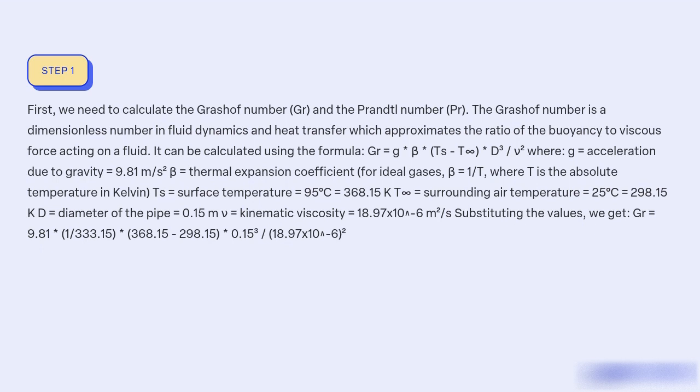D = diameter of the pipe = 0.15 m, ν = kinematic viscosity = 18.97×10⁻⁶ m²/s. Substituting the values: